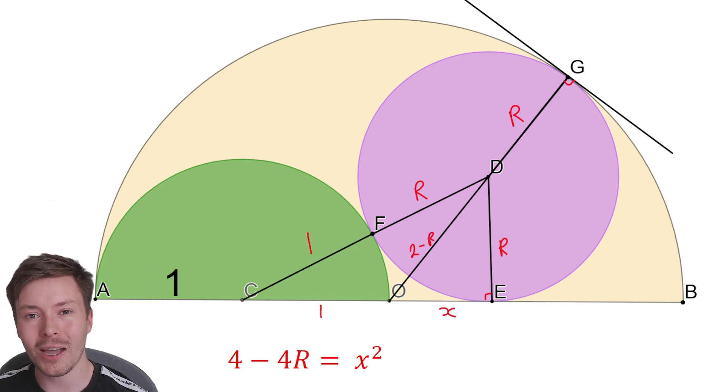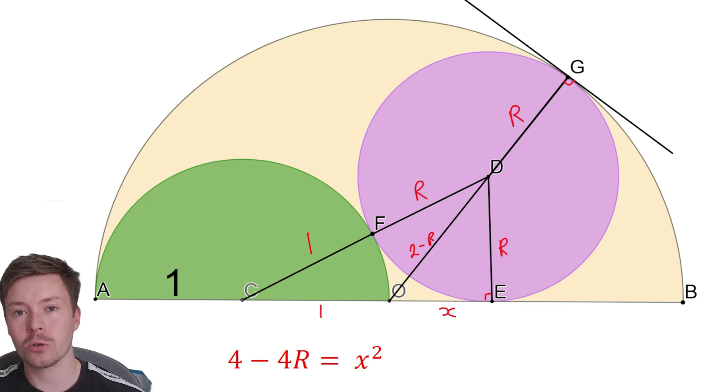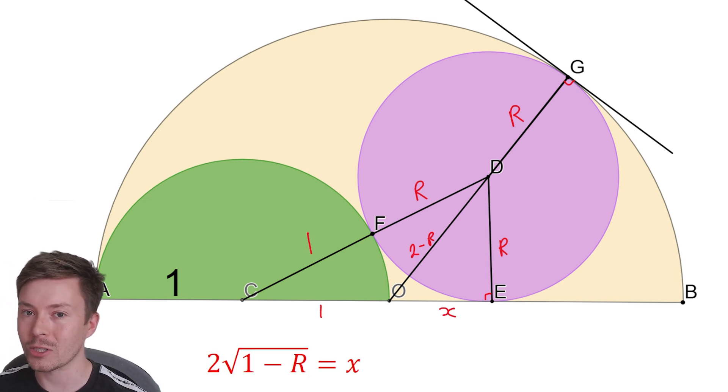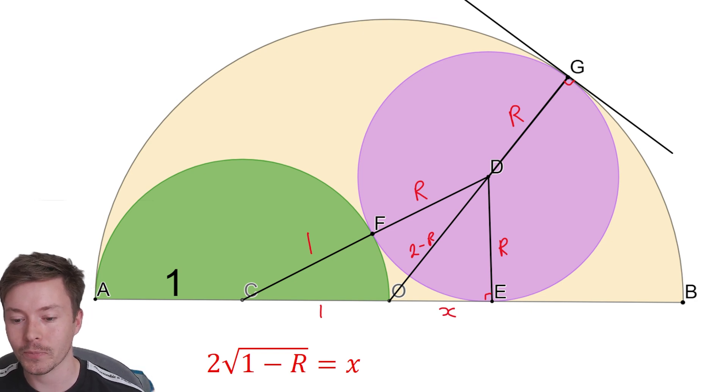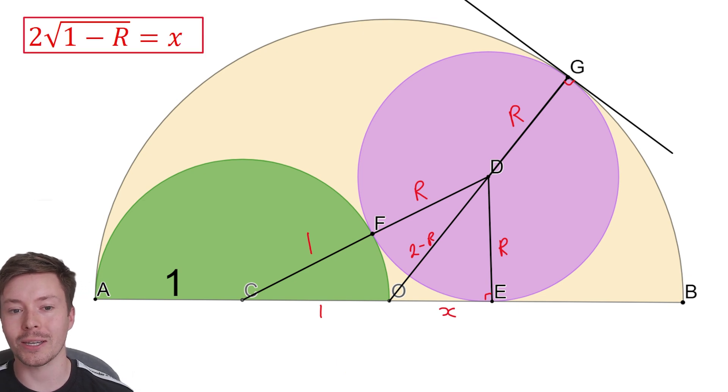We can leave it like that, and you could do your solution with it like that, but what we could also do is simplify this to X. Before I square root both sides, I'm going to factorize out the 4, and it leaves me with 4 brackets 1 minus R equals X squared. If we square root both sides, 2 square root 1 minus R equals X. We're going to tidy that all up, so 2 square root 1 minus R equals X.